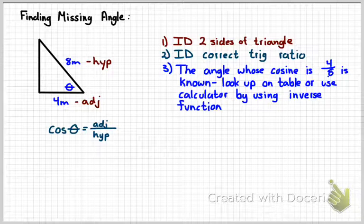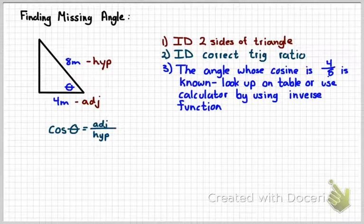So we're going to try to figure out whose angle the cosine is 4 over 8. We can either look that up on a table, or we can use a calculator by using the inverse function. So in this case, the inverse cosine.